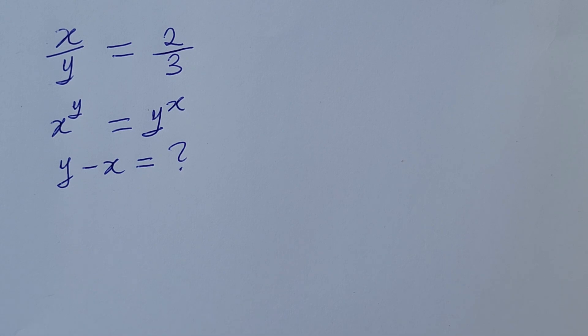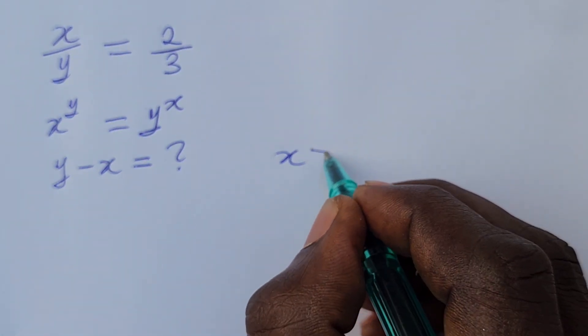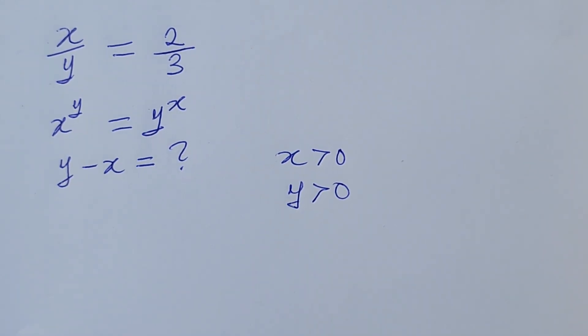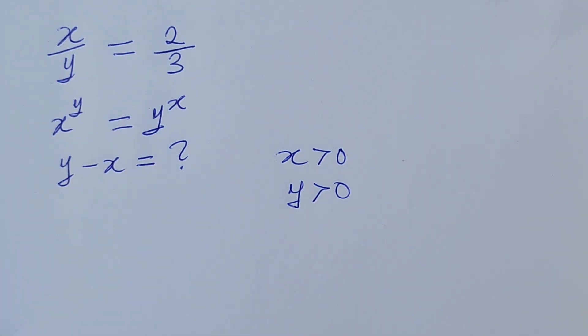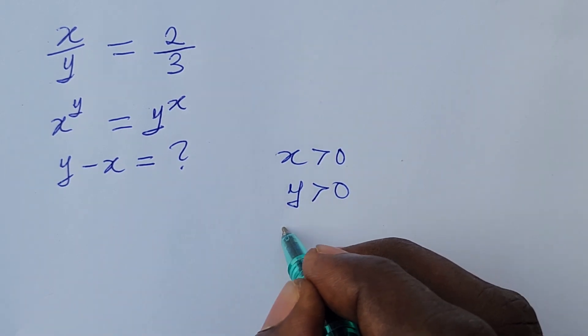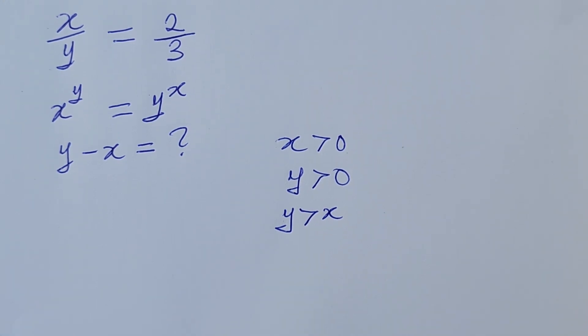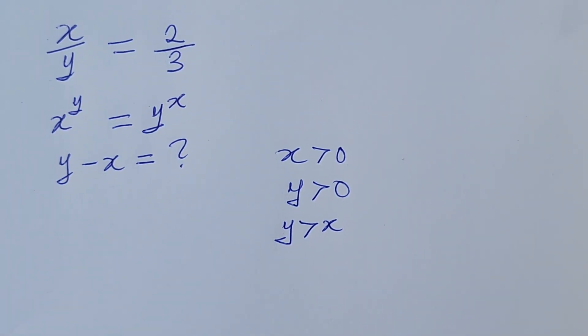Now if you take a critical look at this expression, you'll discover that x will be greater than 0 and also y will be greater than 0. If you look at the first expression here, you also note that y will be greater than x. So how do we now solve for the value of y minus x? Given these two expressions above, it's easy. Let's take our solution.